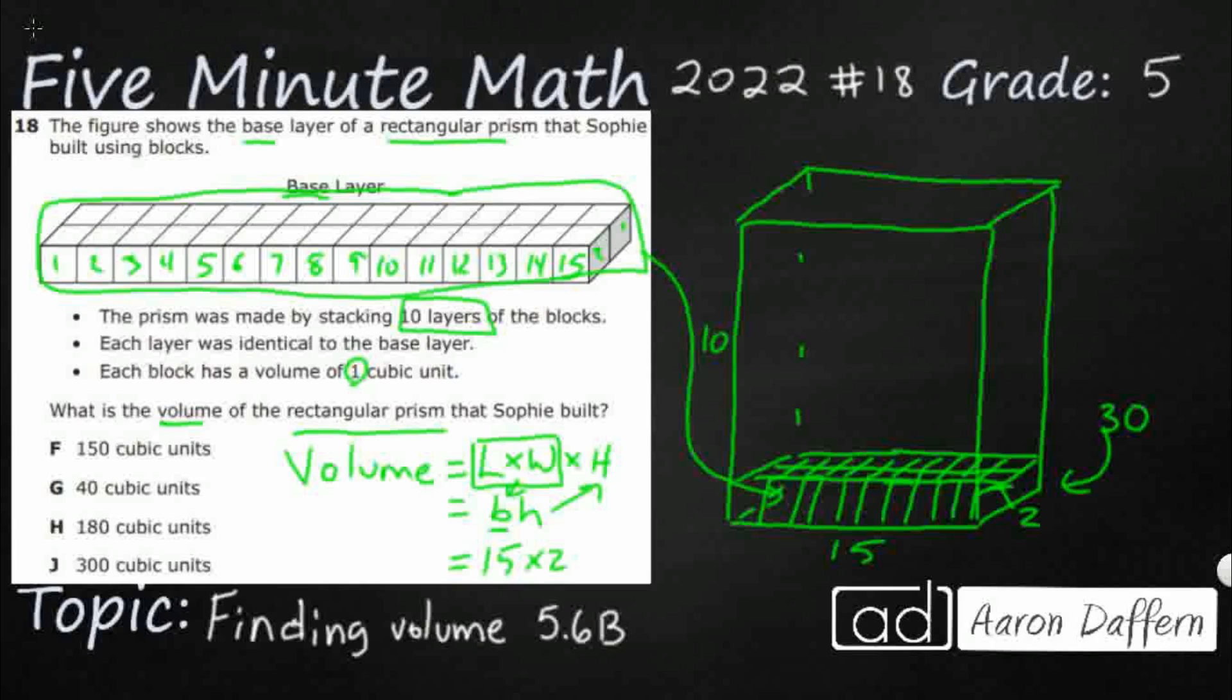And they tell us there are 10 layers. So there are 10 of these layers. I just have one of them. So if I were to draw it, it would just kind of look like this. And I would draw another layer and then another layer, if I could draw it identically, another layer. And I would do it to where there are 10 layers.